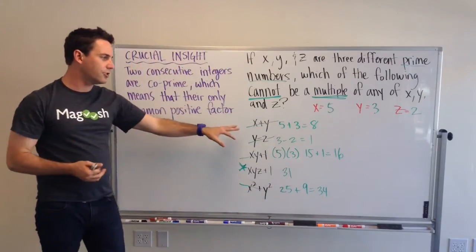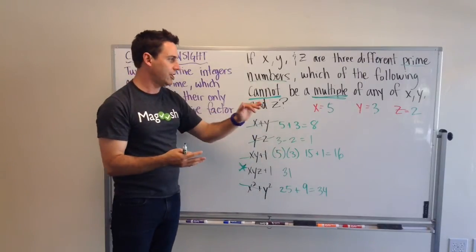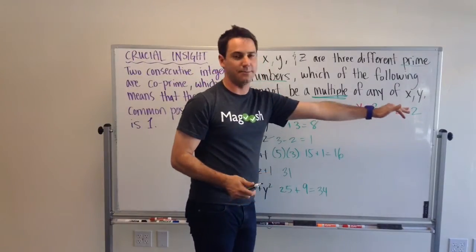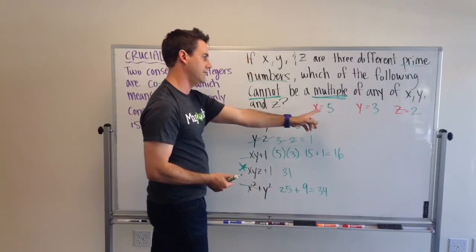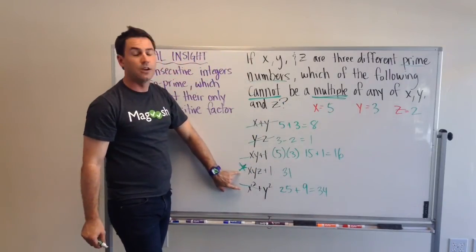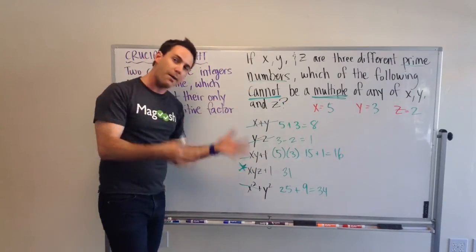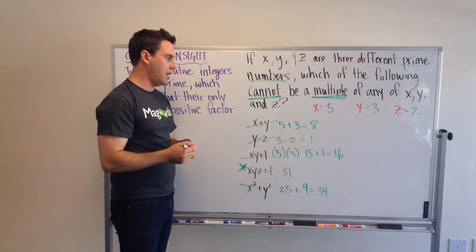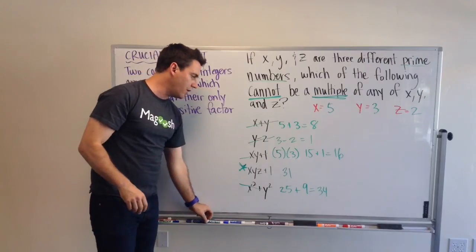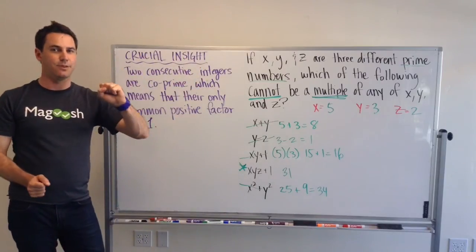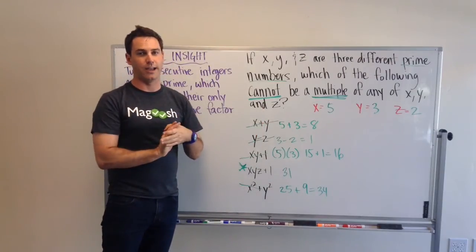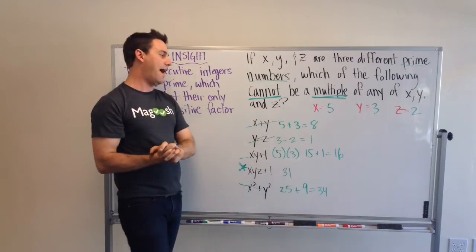So, this approach can get you to the right answer. I actually cheated a little bit, because I was very smart with the numbers that I chose. If you were to do these opposite, 2, 3, and 5, you'd end up having these two, which means you'd have to plug in more numbers again to see which of these two is actually not a multiple. So, that's going to be time consuming on the test. And, the GMAT rewards you for finding shortcuts, for knowing stuff about numbers.